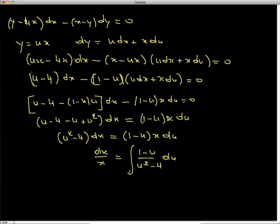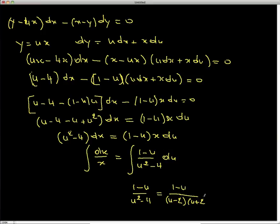Integrating the left side gives ln|x|. For the right side, we use partial fractions: (1 − u)/(u² − 4) = (1 − u)/((u − 2)(u + 2)) = A/(u − 2) + B/(u + 2). Once you find A and B, integrate both sides, then substitute back u = y/x to obtain the final solution.